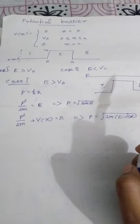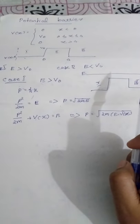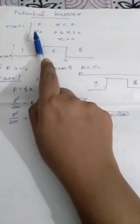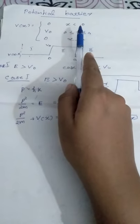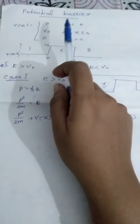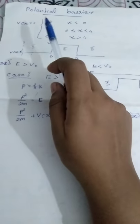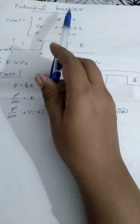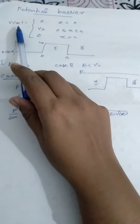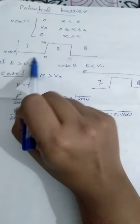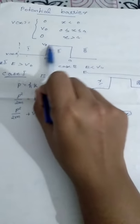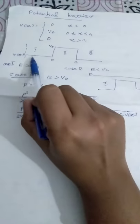Let's go to the next topic: the Potential Barrier. We already have a potential step; next we have to find what is the potential barrier and the corresponding wave function and boundary conditions. The potential energy corresponding to the potential barrier — the potential distribution — we have to look at the profile.